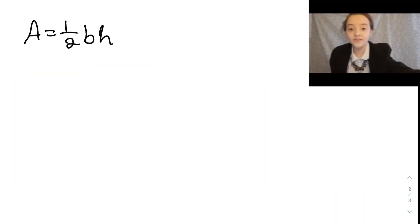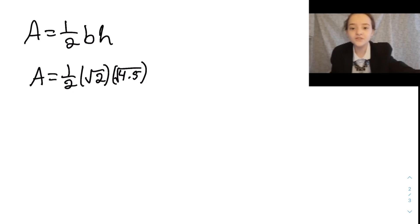Now with our found values, we will find the area of the triangle. When plugging our values into the equation, we get 1/2 times the square root of 2 times the square root of 4.5. After typing this into a calculator, you get the area equals 1.5 units.